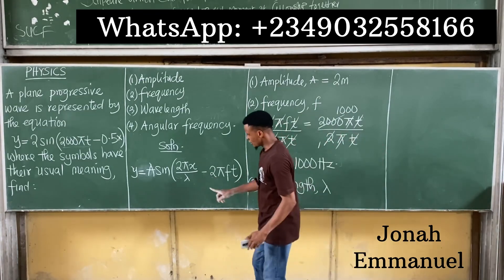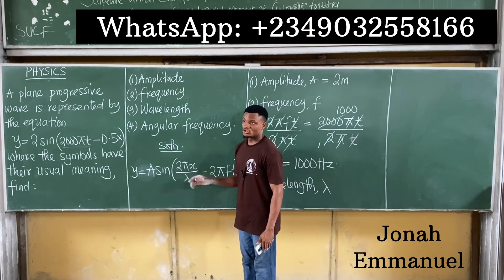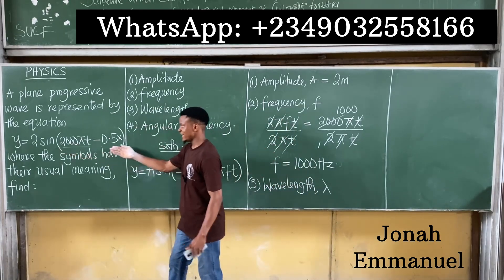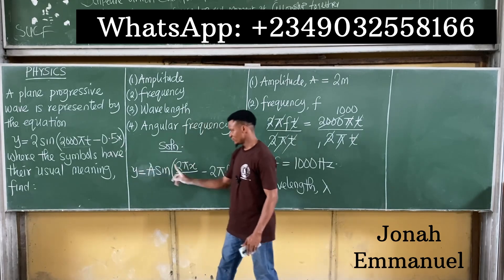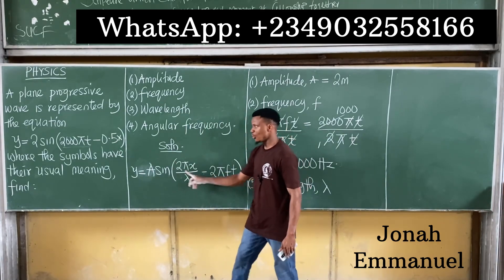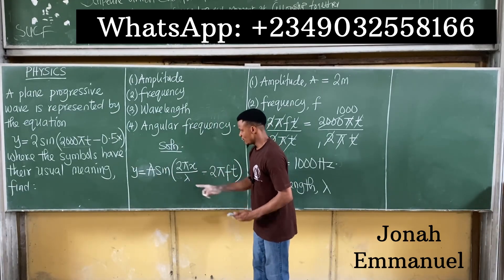So how do we get lambda? How do we get the wavelength? What do we do? The idea will be simple. If you look at this, the wavelength is attached to the term varying x. So just as we did for t, what to do for x? If I look at this here, which term has x? 0.5x. So equate 0.5 to this one here, irrespective of if it comes before the minus or after the minus. It only shows direction.